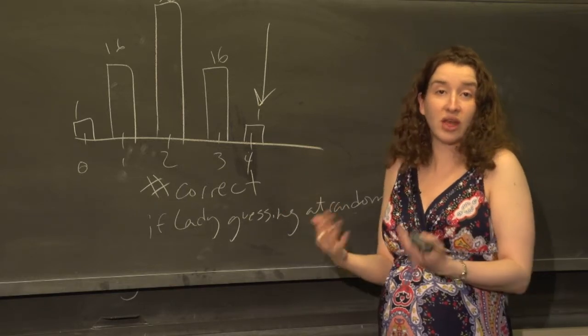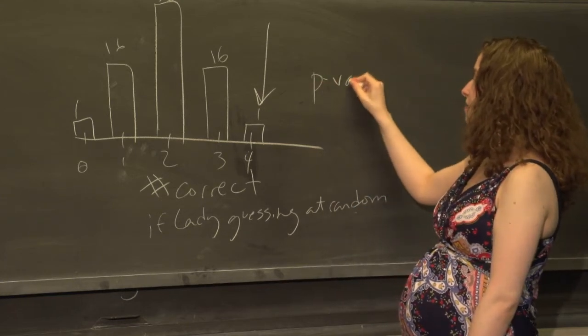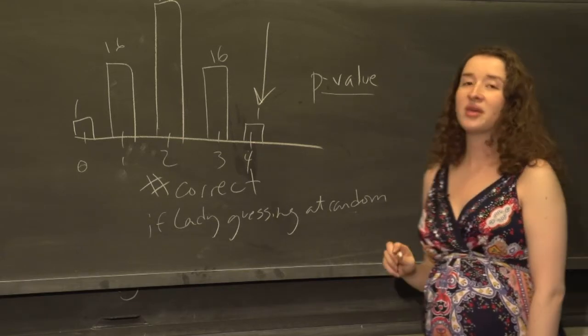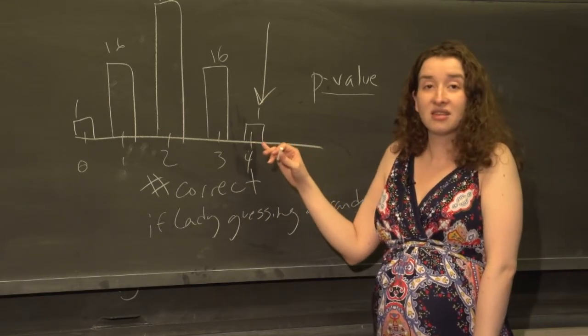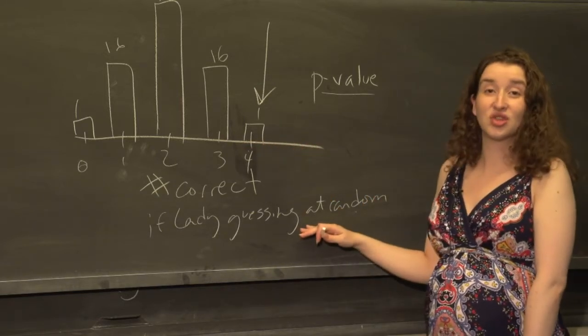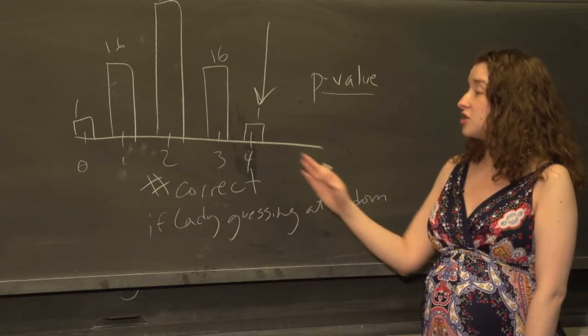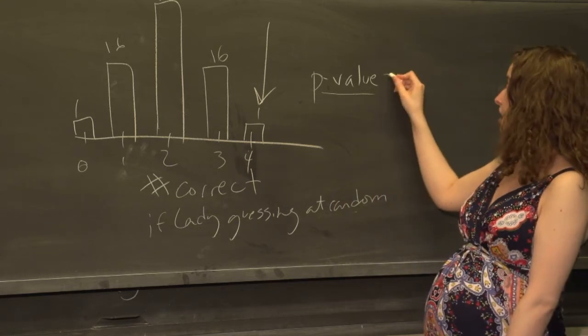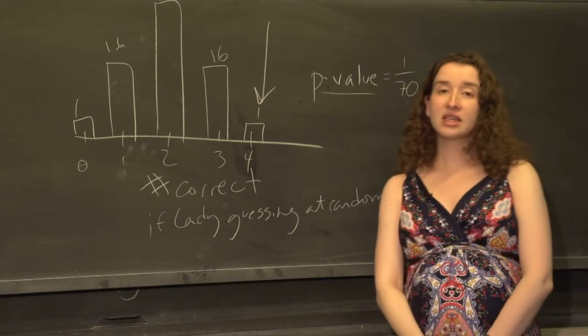Do we find that number surprising? We get to decide for ourselves whether we find it surprising. This number is called a p-value. The p-value is the probability that we'd see data like we actually saw if the truth is that there's nothing going on. Assuming the lady is choosing completely at random, what's the probability she would have gotten all four of them correct just by chance? And here the p-value is one out of 70.